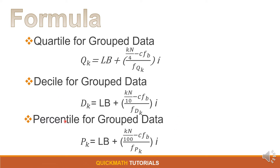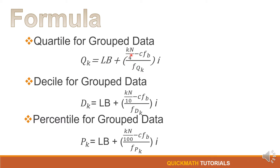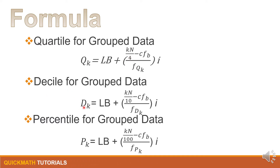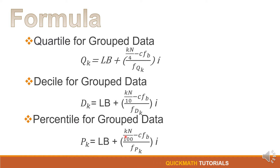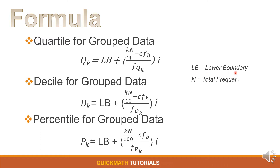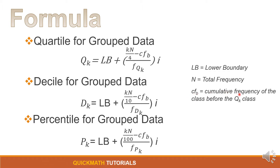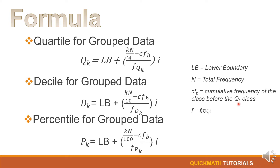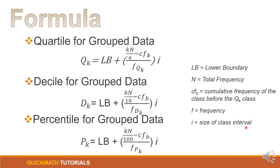These three formulas look the same except for the quartile, we have Q and the denominator is 4 since there are 4 quartiles. For the decile, we have D and the denominator is 10. For the percentile, we have P and the denominator is 100. Where Lb is our lower boundary, n is the total frequency, cf sub b is the cumulative frequency of the class before the Q sub k, D sub k, or P sub k class, f is our frequency, and i is the size of the class interval.